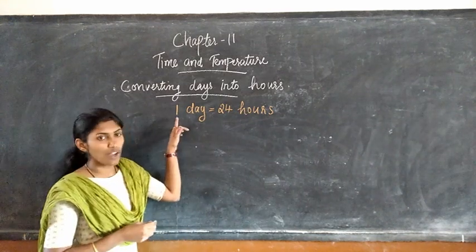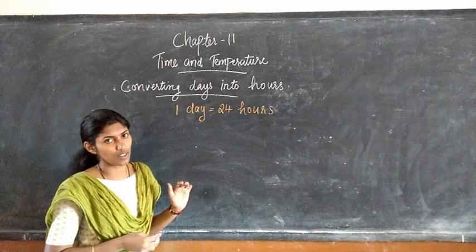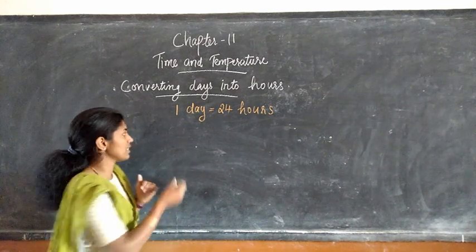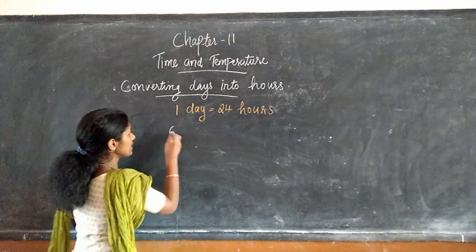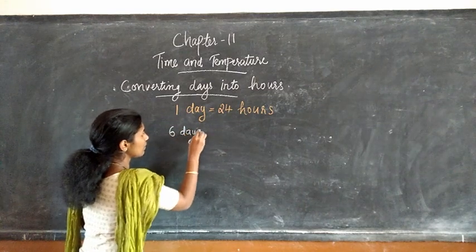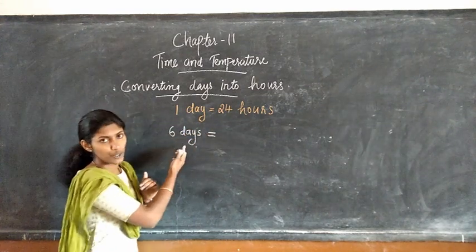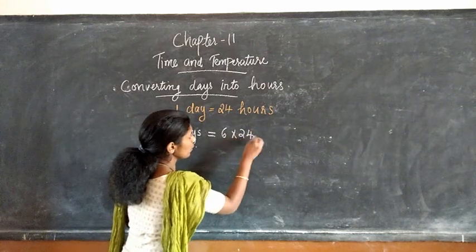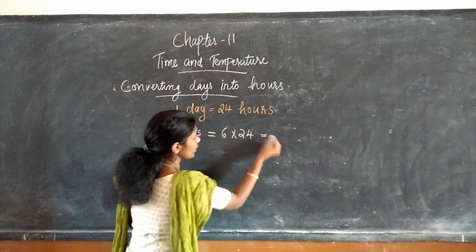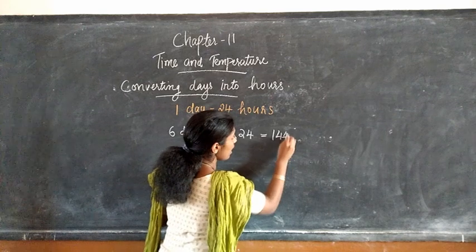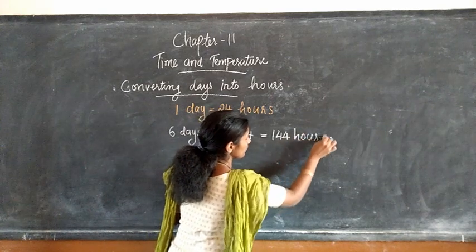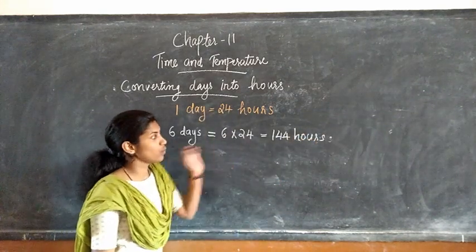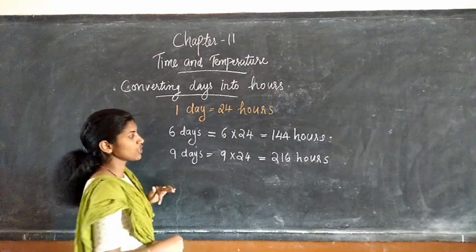Now we will see how we are converting days into hours. We know that 1 day is equal to 24 hours. Our first question is: convert 6 days into hours. We have to convert 6 days into hours. That means 6 into 24, that is equal to 144 hours. So 6 days is equal to 144 hours.